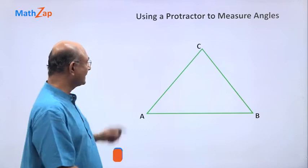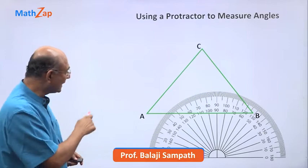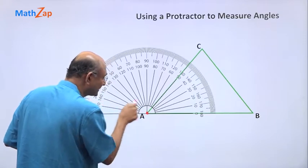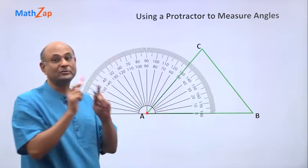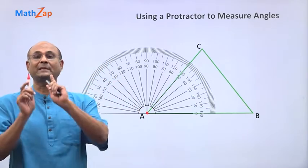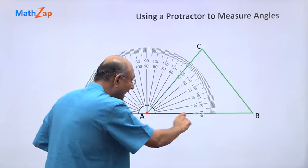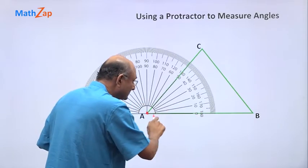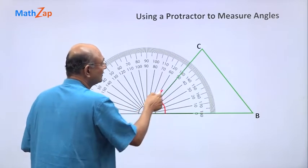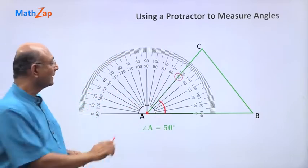Let us now use a protractor to measure the angles of this triangle. So first I take a protractor and move it such that the vertex A matches with the center of the protractor. Every angle you want to measure, the vertex of that angle must match the center of the protractor. And then this arm of the angle is matching with the baseline of the protractor. Then this is going to tell us that angle A is 50 degrees.